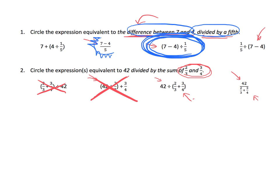So that makes this one a loser. And so both of these end up being the winner. Both of these are examples of 42 divided by the sum of 2 thirds and 3 fourths. So there we go. We found our two magic answers for that question.